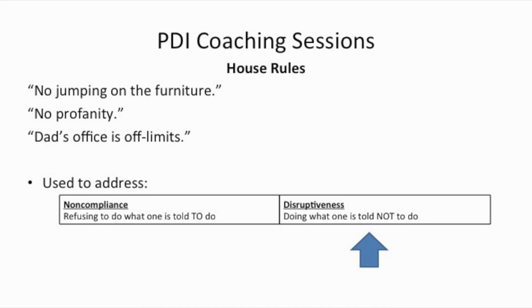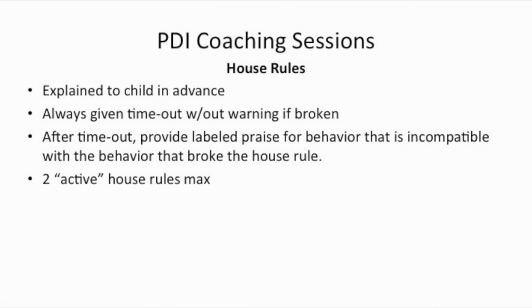Towards the end of therapy, we discuss house rules — standing rules that address disruptiveness, which is doing what you're told not to do. Examples include no jumping on the furniture, no profanity, or dad's office is off limits. House rules should be explained to the child in advance, be developmentally appropriate, and adequately described so the child has time to learn what they mean. When a house rule is disobeyed, the child is given a timeout without warning.